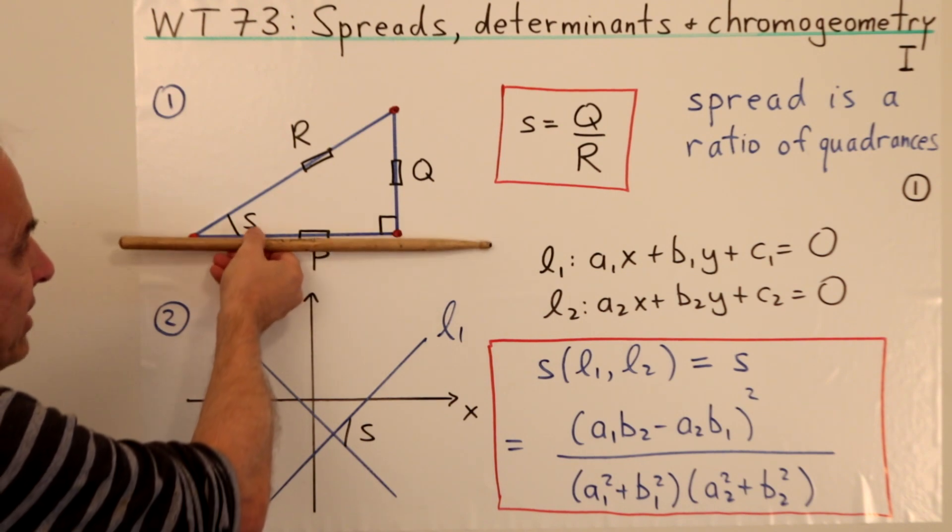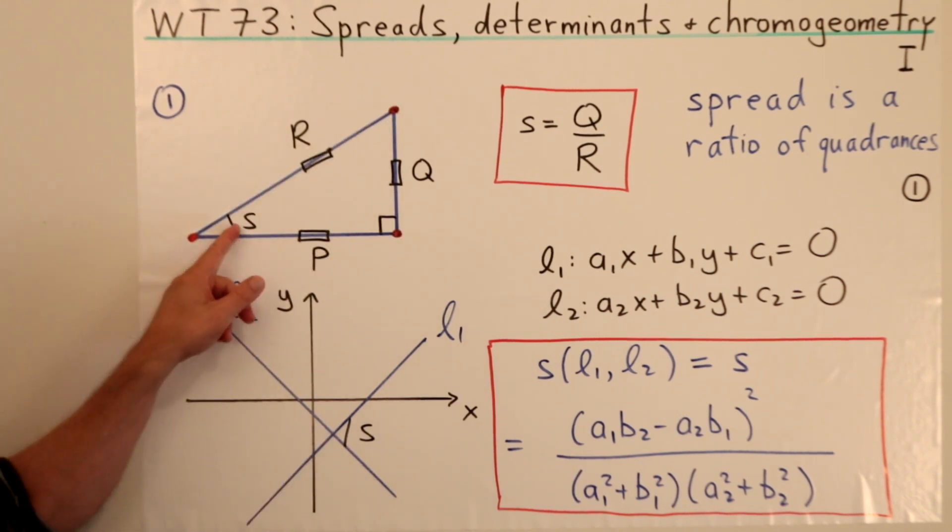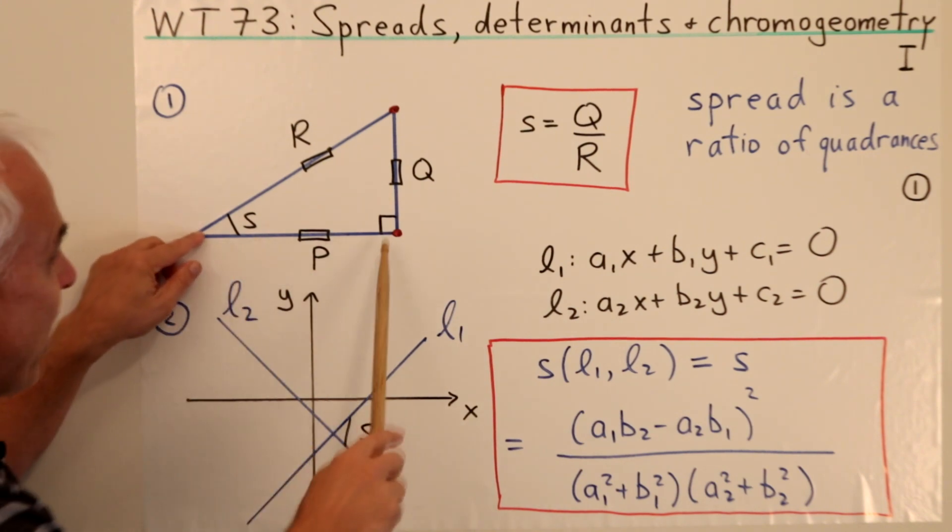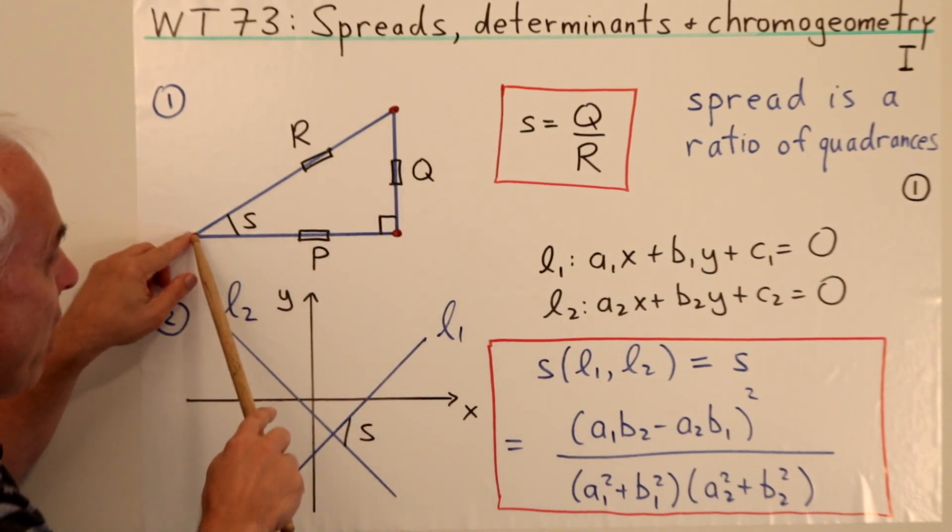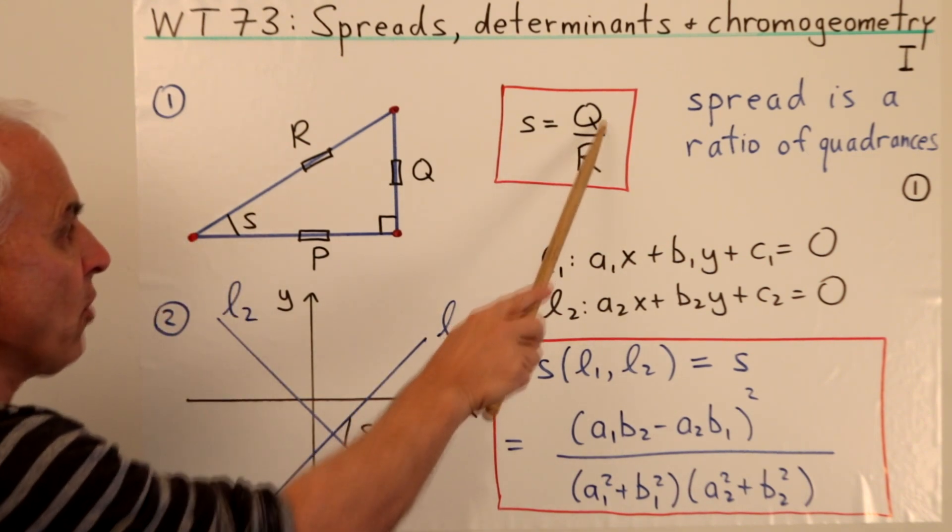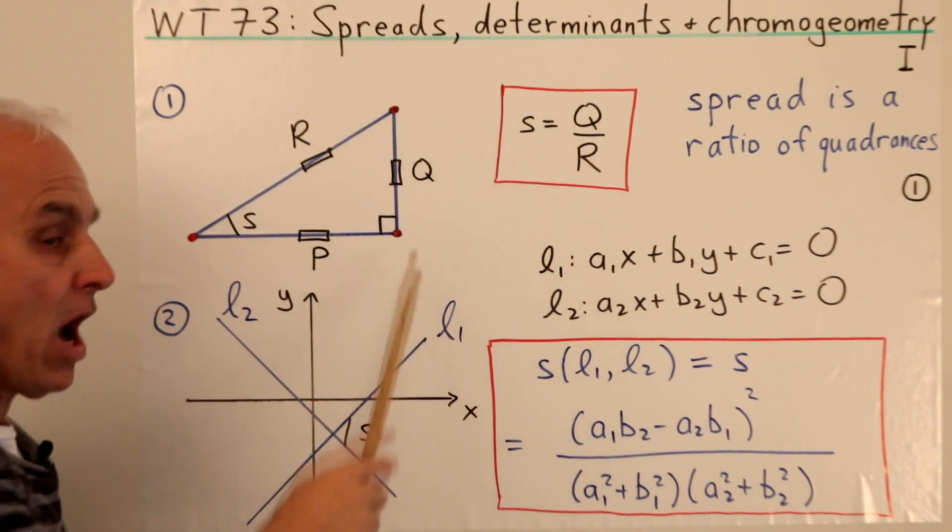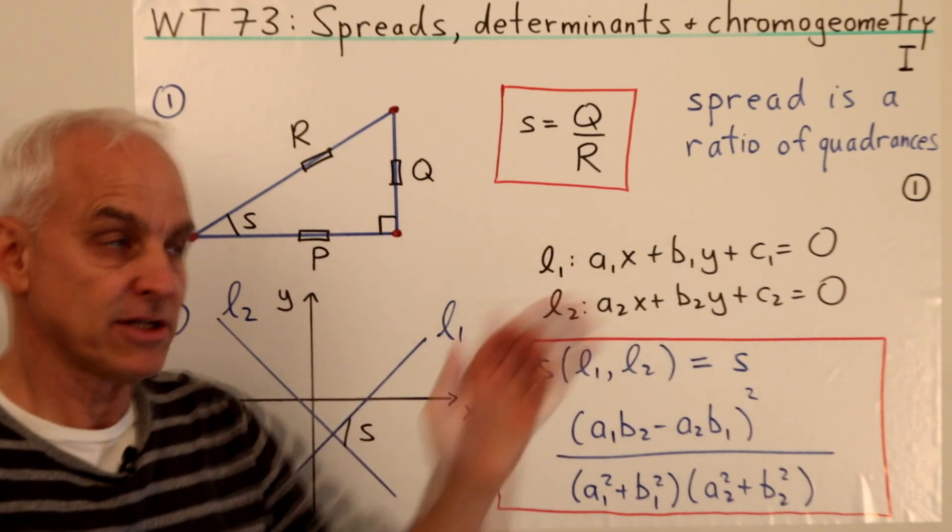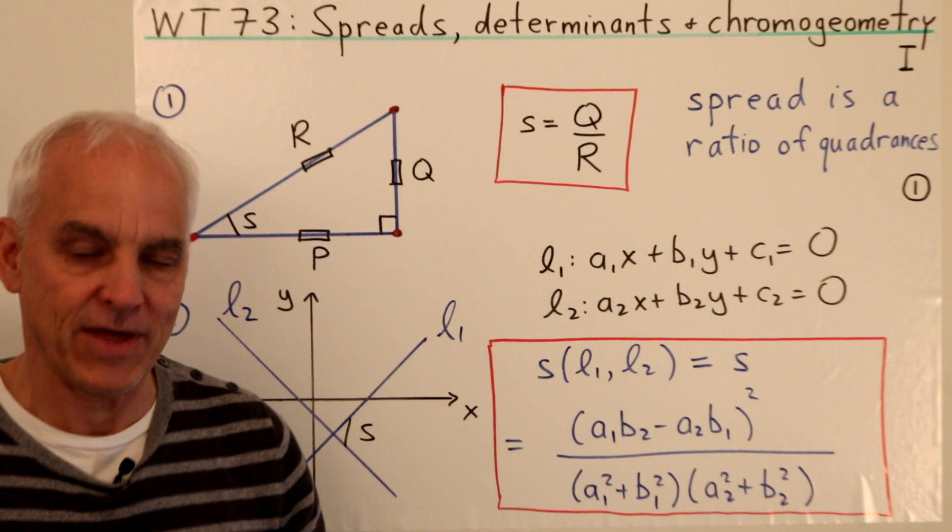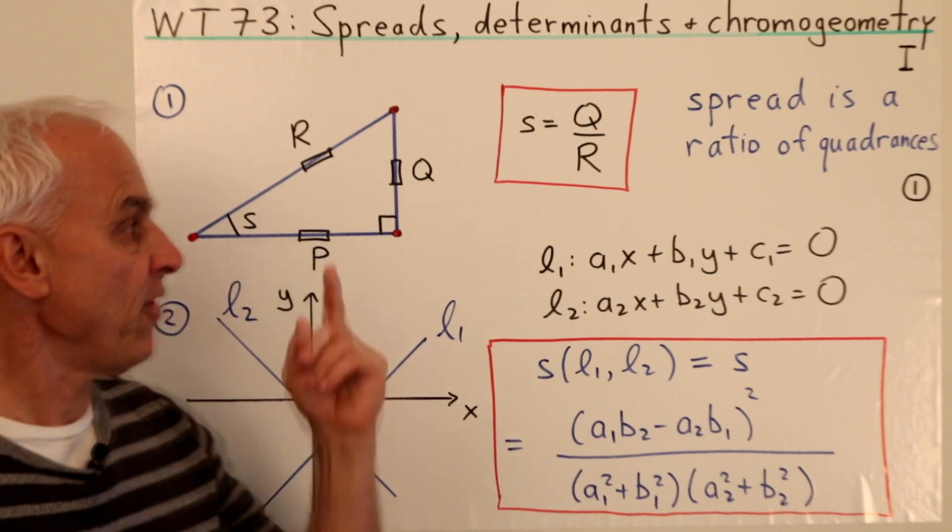So here we have two lines, this one here and this one here, and the spread between those two lines, denoted S. In terms of this right triangle here, with quadrances as P, Q, and R, the spread S is defined as Q over R, the ratio of the opposite quadrance to the hypotenuse quadrance. So that ratio is the spread.